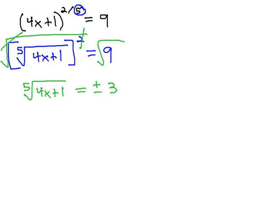Now, we can get rid of the radical. The opposite of a 5th root is a 5th power, so we will take the 5th power of both sides. The 5th power and 5th root are inverses. We're left with 4x plus 1 equals plus or minus, because a positive to the 5th power is positive, and a negative to the 5th power is negative, and 3 to the 5th power is 243.